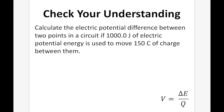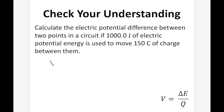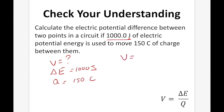Check your understanding. Calculate the electric potential difference between two points in a circuit if 1,000 joules of electric potential energy is used to move 150 coulombs of charge between them. V is our unknown. ΔE is 1,000 joules and Q is 150 coulombs. So V = 1000 / 150 = 6.67 volts. We need two significant digits, so our final answer is 6.7 volts.